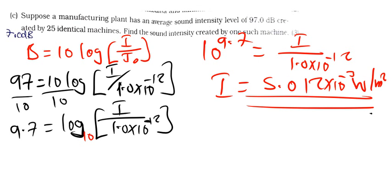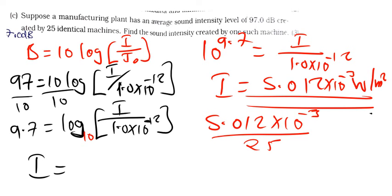Now we want to find the intensity of just one machine. So we divide this by 25. So we'll say 5.012 times 10 to the power negative 3 divided by 25. Meaning that the intensity for just one machine is, we divide that, we'll be able to get 2.0.